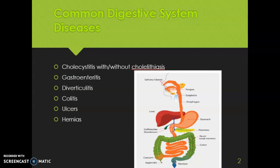An ulcer is an open sore — these can be internal or external. A hernia is when part of an organ is displaced and protrudes through the wall or cavity, such as through the abdominal wall. The most common causes of GI bleeding are gastric or intestinal ulcers as well as diverticular diseases of the intestine.